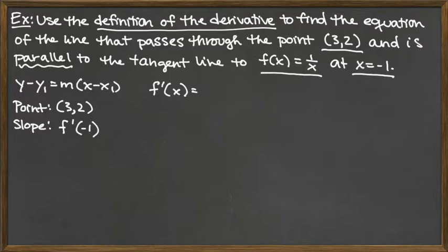So f'(x), I'm going to choose the h going to 0 limit because that's the one I typically prefer to deal with. I usually prefer that one because it's easier to see when there's a common factor of h on the top that cancels with that h on the bottom. So the limit as h goes to 0 of [f(x+h) - f(x)]/h is what we're looking for.